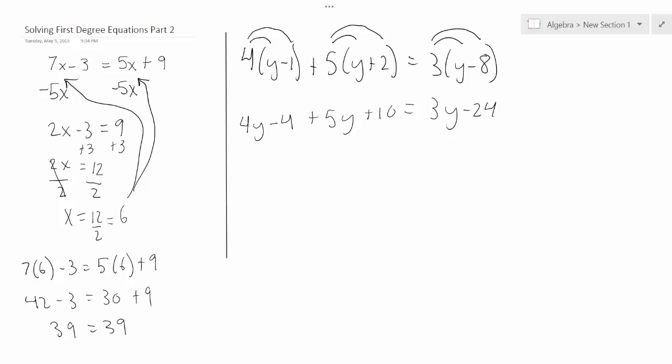Combine like terms on both sides. So the 4y and the 5y will combine to make 9y minus 4 plus 10 equals 3y minus 24. Combine these two. So 9y plus 6 equals 3y minus 24.